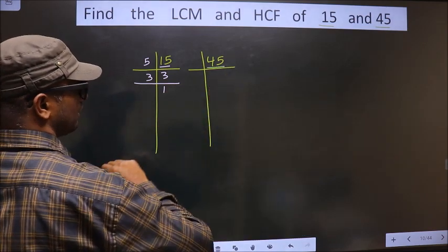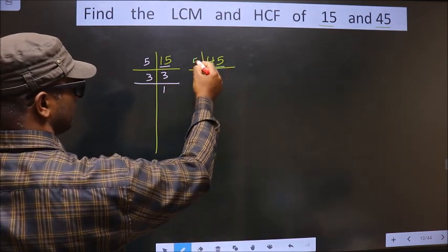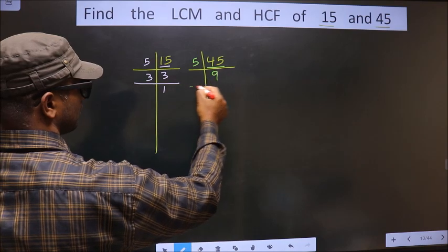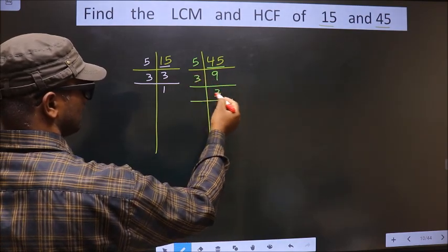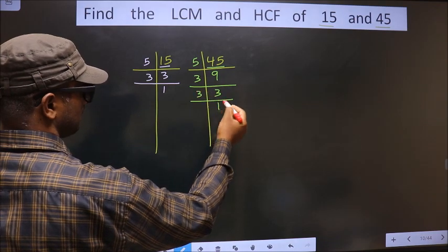Now here we have 45. 45 divided by 5 gives 9. Now 9 divided by 3 gives 3. Now 3 is a prime number, so we take 3, and 1 divided by 3.